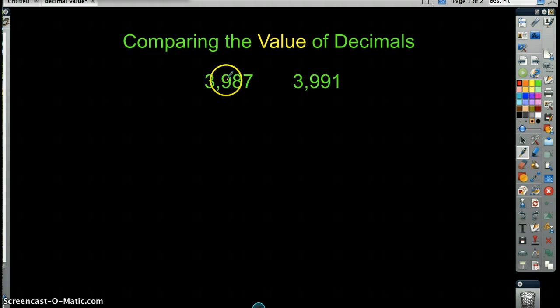And so, what we would say is 3,987 is less than 3,991, because this number right here, 3,991, has more tens in it than this number. And really, that's how we compare numbers. The nice thing about decimals is we're going to use the exact same method in order to do it. Let me show you what I mean.